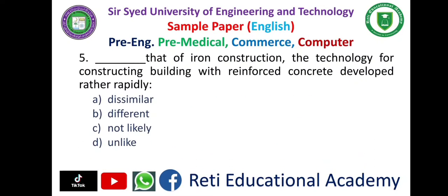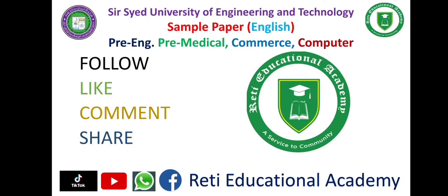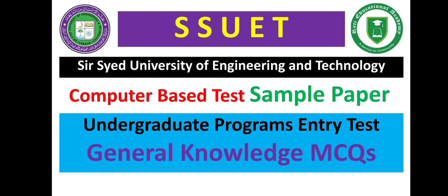Question number 5: 'Dash that of iron constructions, the technology for constructing buildings with reinforced concrete developed rather rapidly.' — A. Dissimilar, B. Different, C. Not Likely, D. Unlike. The correct answer is D: Unlike. Subscribe to Rati Educational Academy YouTube channel and follow us on TikTok, WhatsApp, and Facebook.